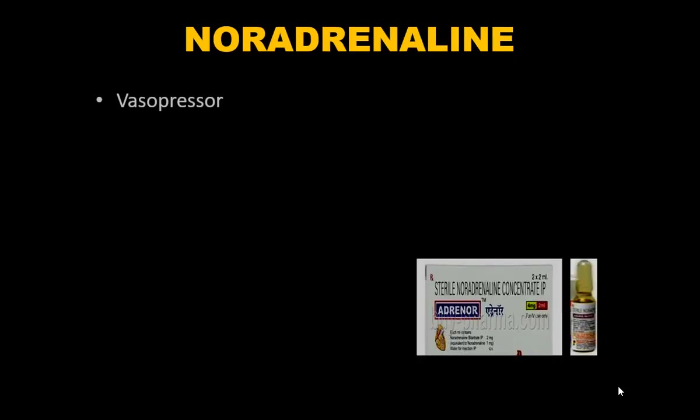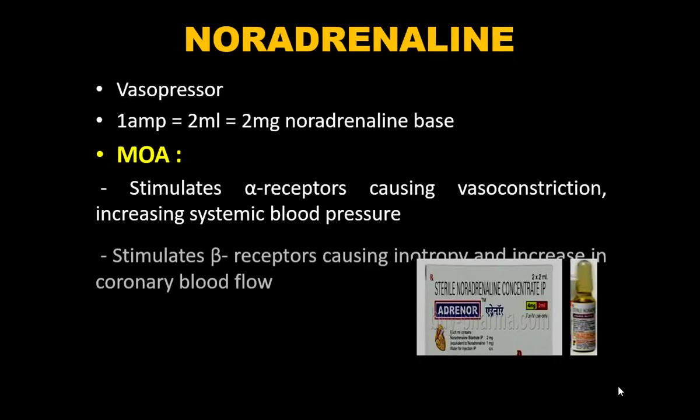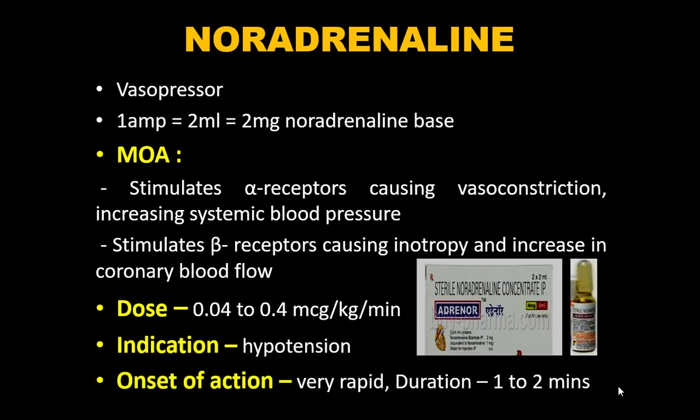Vasopressors: noradrenaline is the most commonly used vasopressor and the drug of choice in septic shock per surviving sepsis guidelines. One ampoule contains 2 mL with 2 mg of noradrenaline base. Mechanism: stimulates alpha receptors causing vasoconstriction and raises systemic blood pressure; also stimulates beta receptors causing inotropy and increased coronary blood flow. Dose: 0.04–0.4 mcg/kg/min.